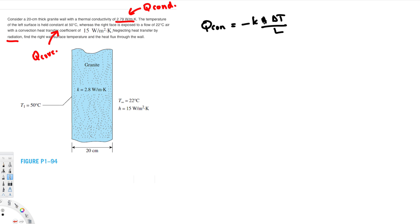Here K is thermal conductivity, A is cross-sectional area, delta T is T2 minus T1, and L is the thickness, which is 20 centimeters. Let's plug in the values: thermal conductivity is 2.79 watts per meter Kelvin, times the cross-sectional area A.